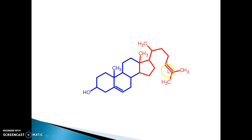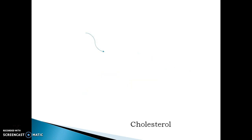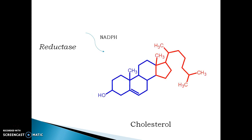The dienol isomerizes to desmosterol, where the site of unsaturation at C7 is reduced and a new site of unsaturation is formed at C5. Finally, the structure of cholesterol differs from desmosterol in having a site of unsaturation at C24, which is reduced, and cholesterol is formed.